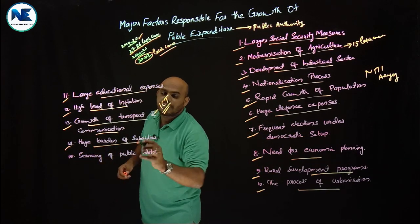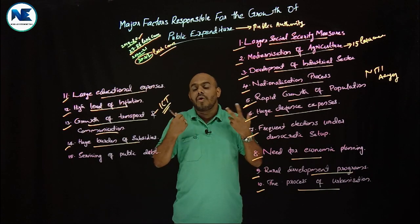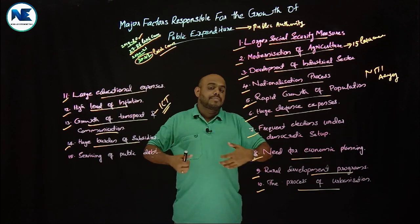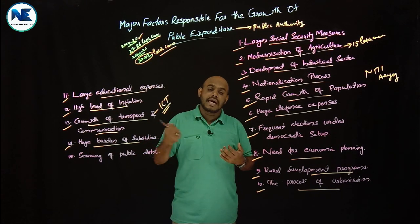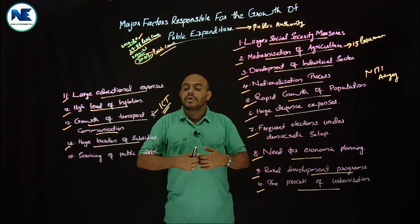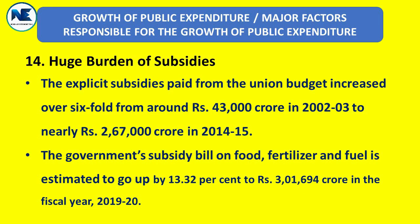The fourteenth point is the huge burden of subsidies — including food subsidies and non-food subsidies. We are spending on minimum support prices, agricultural subsidies, irrigation subsidies, and fertilizer subsidies. The explicit subsidies paid from the union budget increased over sixfold — from around rupees 43,000 crore in 2002-03 to nearly rupees 2,67,000 crore in 2014-15. The huge burden of subsidies is another major factor responsible for the growth of public expenditure.